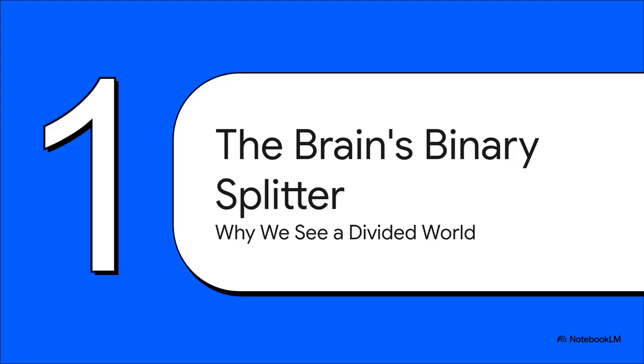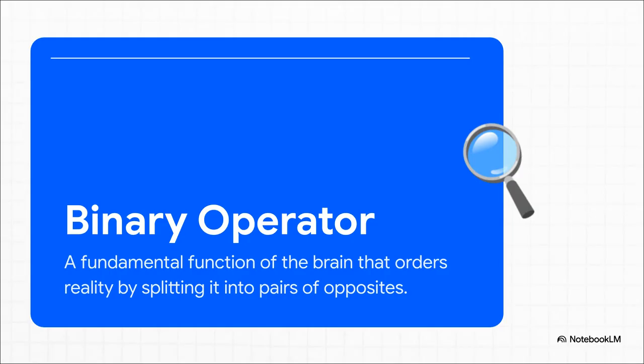Well, this gets us to a really core mechanism that literally shapes our reality. Think of it as a kind of binary splitter that's hardwired into our thinking. Neuroscientists call it the binary operator. It's this fundamental job the brain has to take the messy, chaotic flow of information coming in and just chop it up. It sorts everything into neat opposing pairs. Good or bad, right or wrong, up or down, me or you. It's basically how our brain creates a sense of order out of chaos.